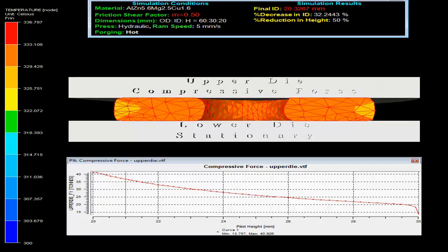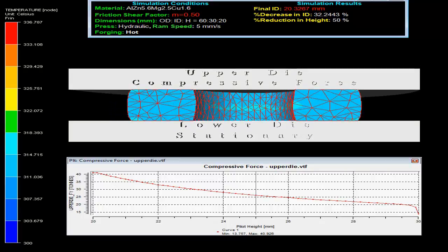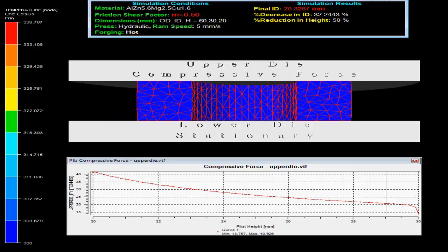The graph between force on upper die versus pilot height is shown. The temperature evolved during the process can be compared with the help of the scale given on the left side.